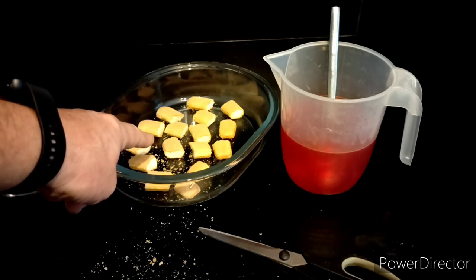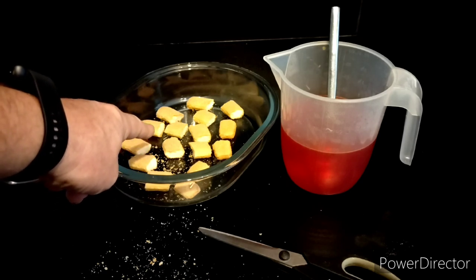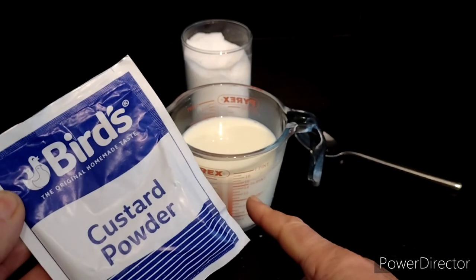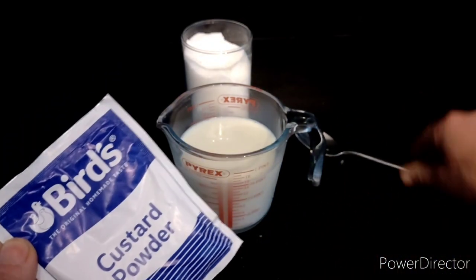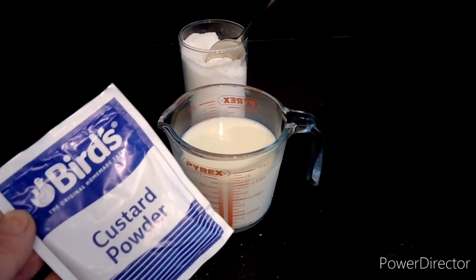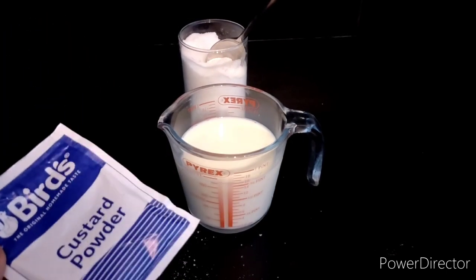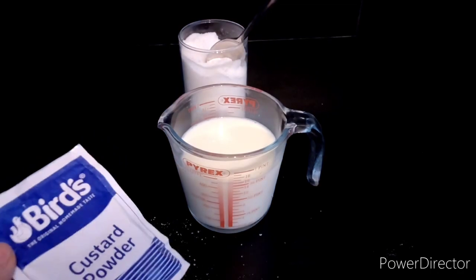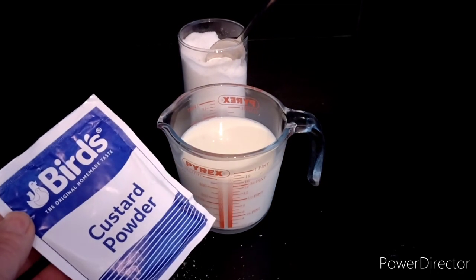Custard time: 425ml milk, two tablespoonfuls of sugar - I'm using dessert spoons because I don't want it too sugary - and then custard powder. And you boil it up in a saucepan or like me you can make it in a microwave, so that's what I'm gonna do.